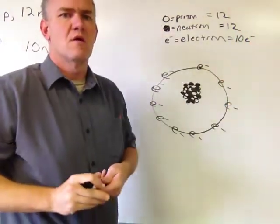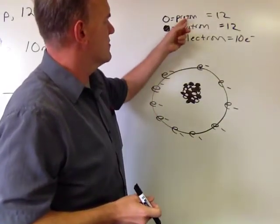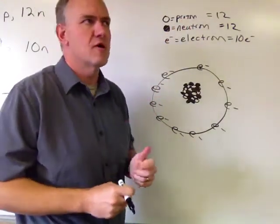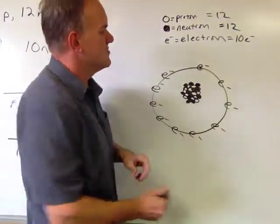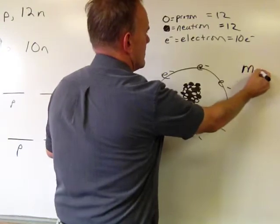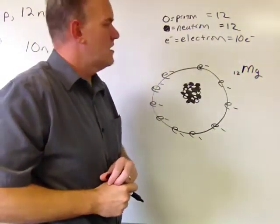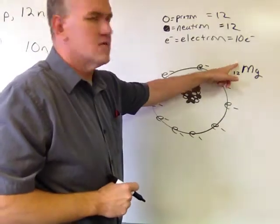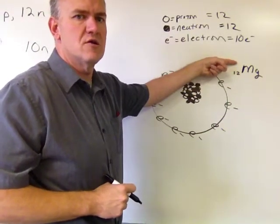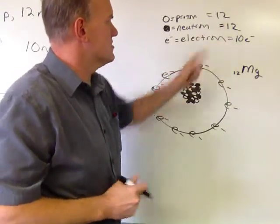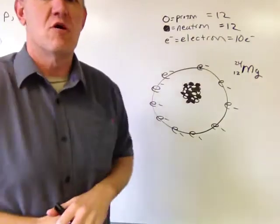And so we already know from before that we would look at the proton number to determine what it is. If you get out your periodic table and look for element number 12, it's magnesium. And so we can start to symbol that way. The number up here then would be the mass number. That would be achieved by adding the protons and the neutrons together. 12 and 12 is 24.